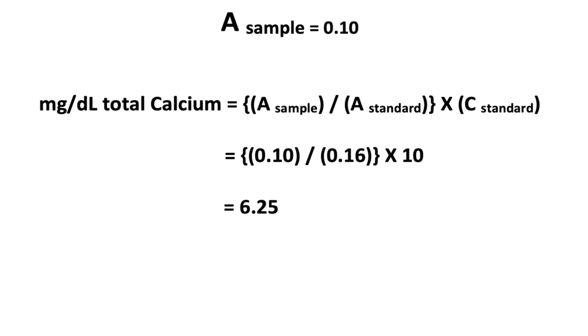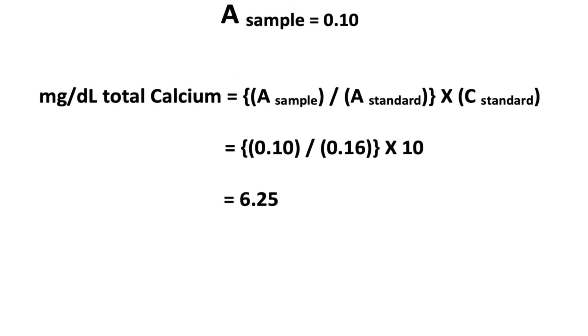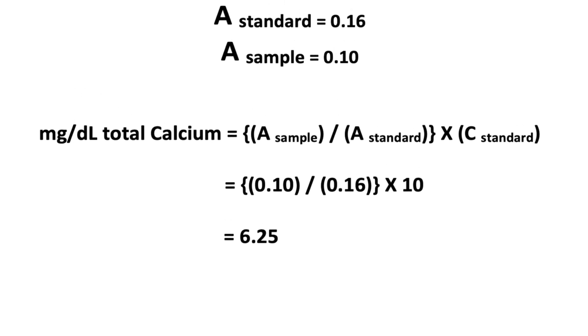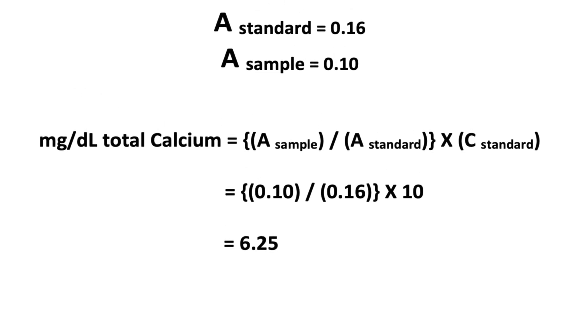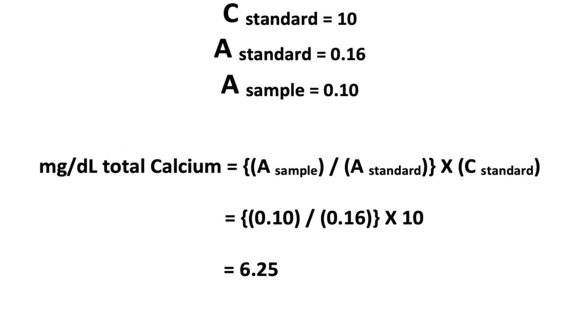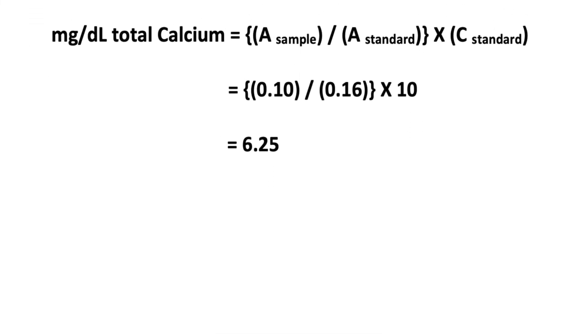We can calculate the calcium level now by dividing the absorbance of the sample, which is 0.10, and the absorbance of the standard, which is 0.16. Then we will multiply it with the concentration of the standard, which is 10 milligrams per deciliter. So the calcium level in our sample is 6.25 milligrams per deciliter.